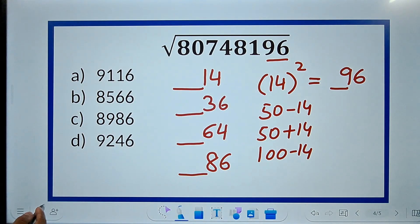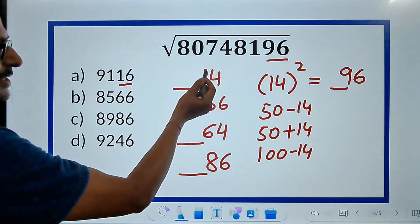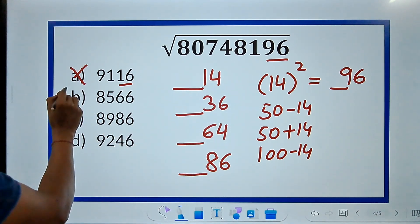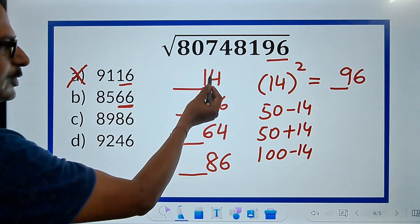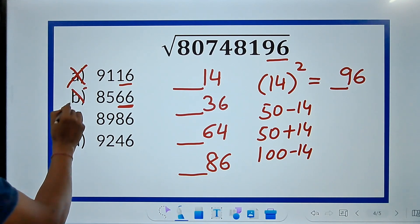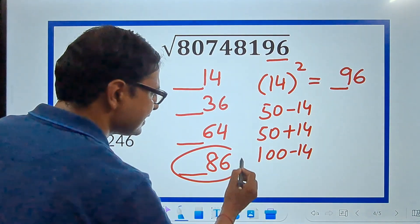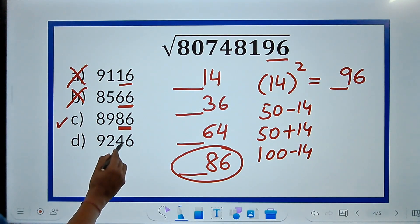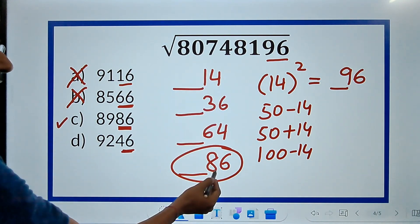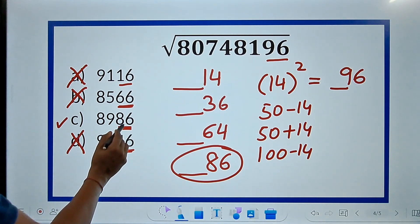So, among these, which one is the correct answer? 16. Is it a possibility? No. 66. Is it a possibility? Still no. 86. Is it a possibility? Oh yes, it is a possibility. So, this can be one of the options. 46. Is it a possibility? No.